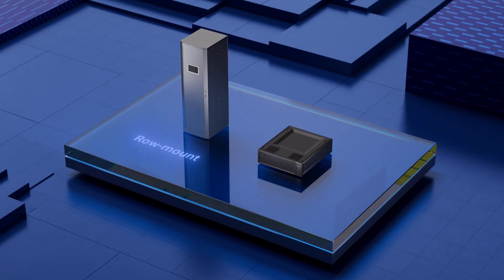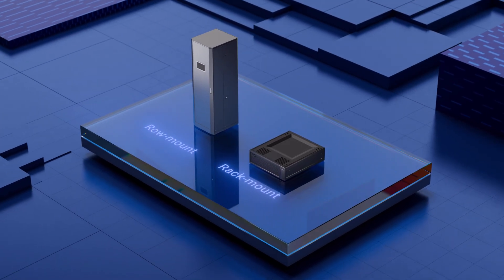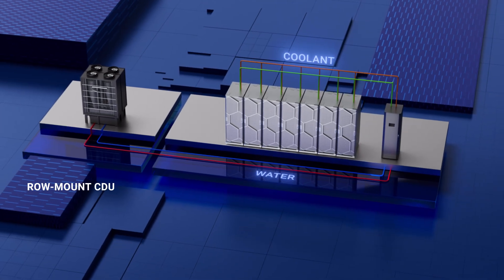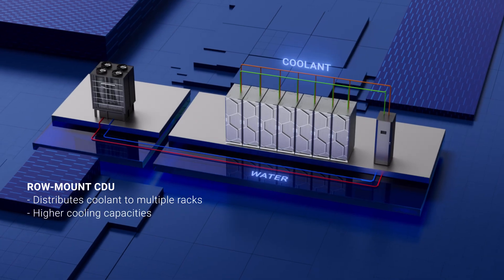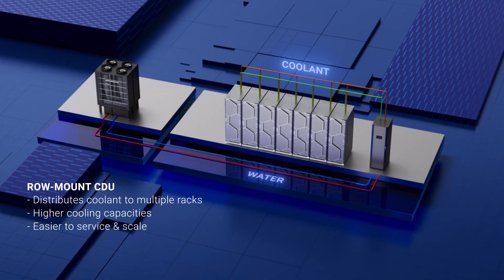CDUs come in two form factors, row mount or rack mount. Row mount CDUs can provide coolant to multiple racks at one time and have higher cooling capacities than rack mount CDUs.